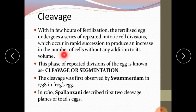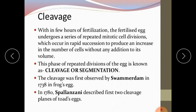The size of the embryo, the size of the zygote, and the size of the egg do not increase during cleavage. This phase of repeated divisions is known as cleavage or segmentation. Cleavage was first observed by Sommerdham in 1738 in frog's egg, and in 1780 Spallanzini described the first two cleavage planes of Torax.